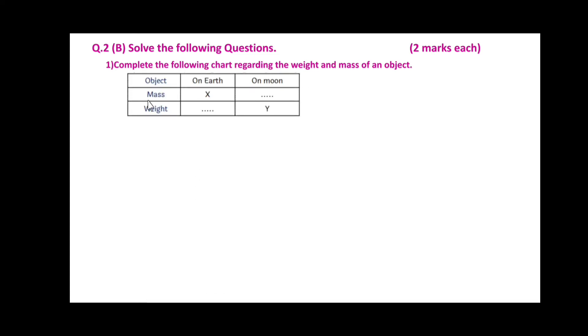Solve the following questions, 2 marks each. Number 1: Complete the following chart regarding the weight and mass of the object. Here object mass and weight are given. Objects are on earth and on moon. Mass on earth is x. Then what will be the mass on the moon? Weight on the moon is y. What will the weight on the earth?